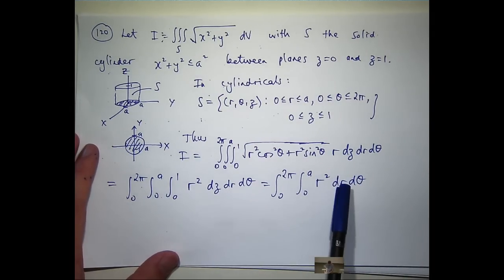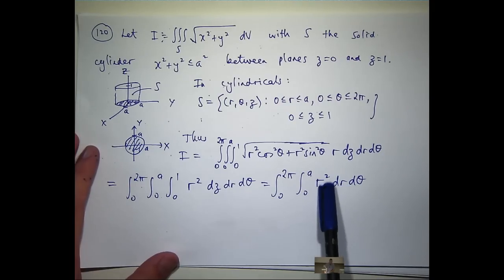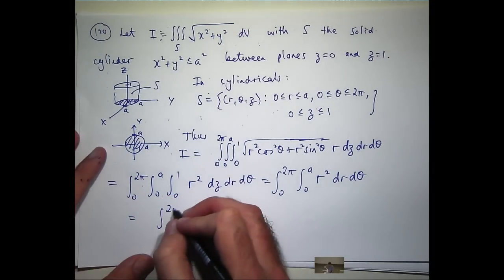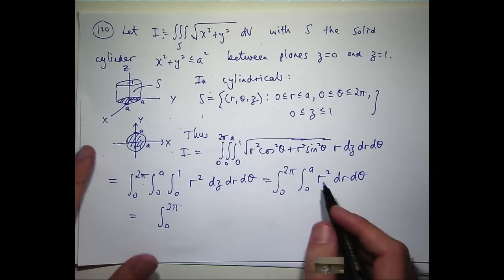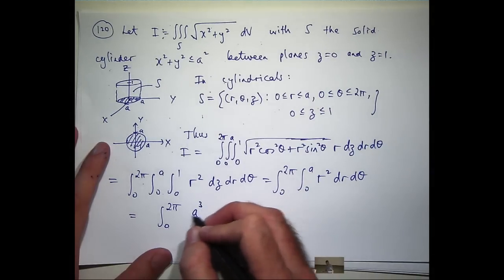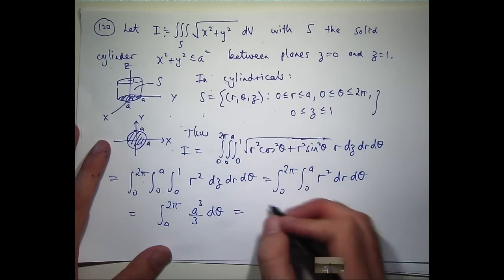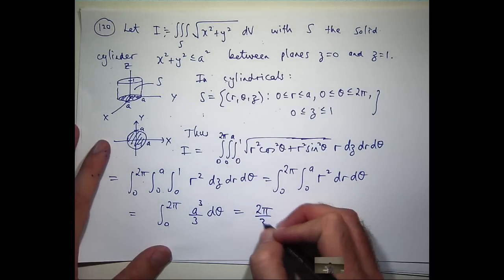Then, integrate r squared with respect to r. It's going to become r cubed on 3. When I plug in a and 0, I'll get a cubed on 3. And you can see this has got nothing to do with theta, so all I need to do is multiply by 2 pi.